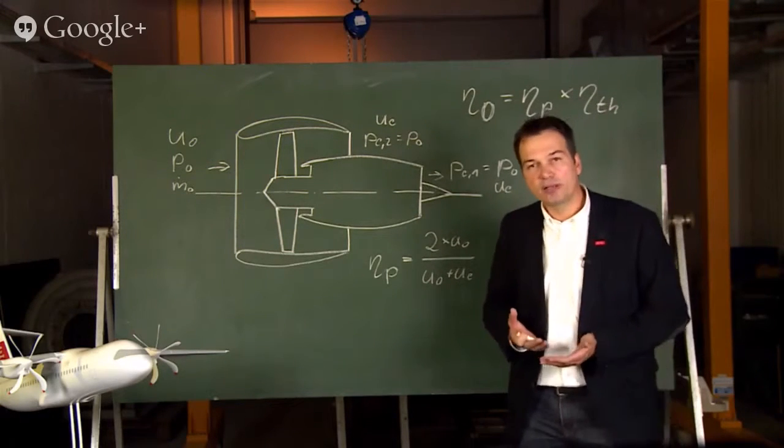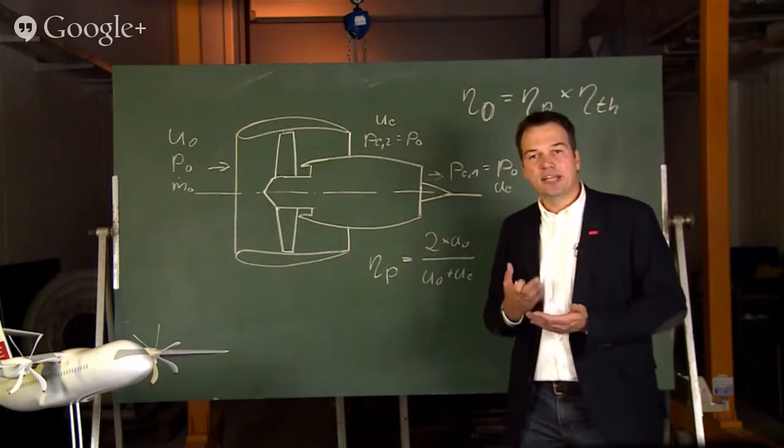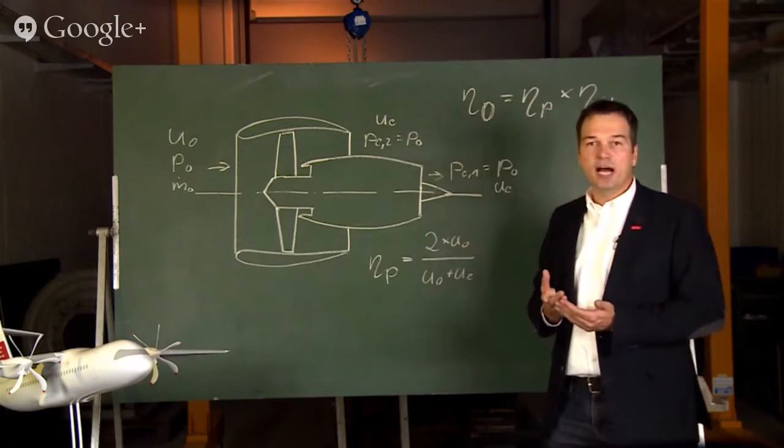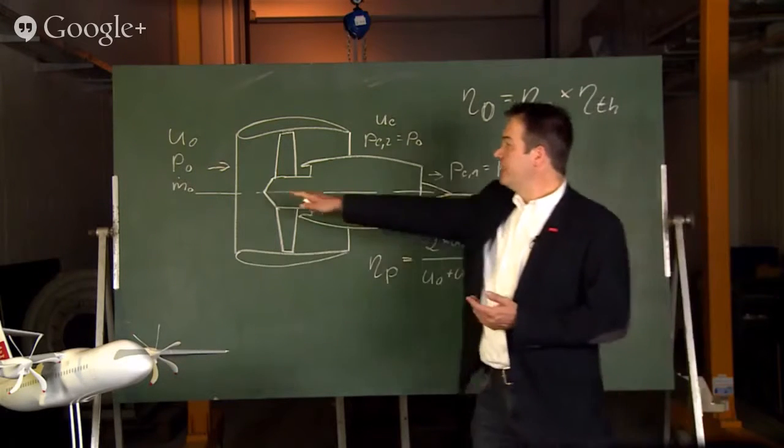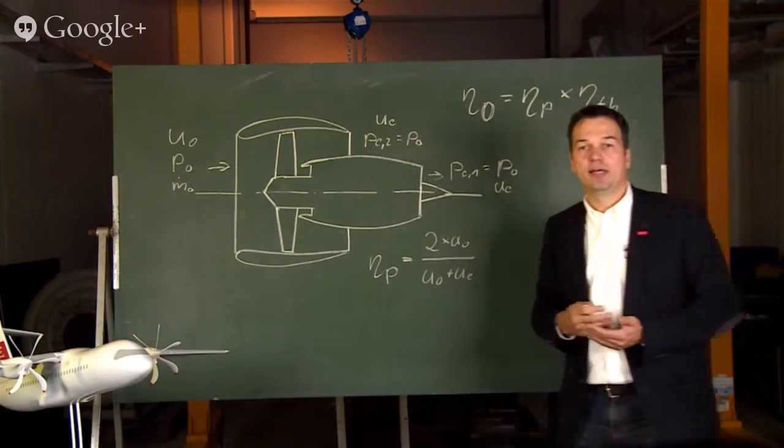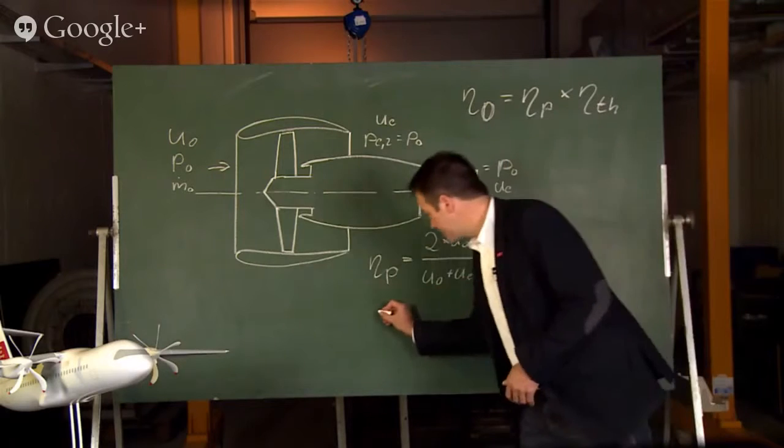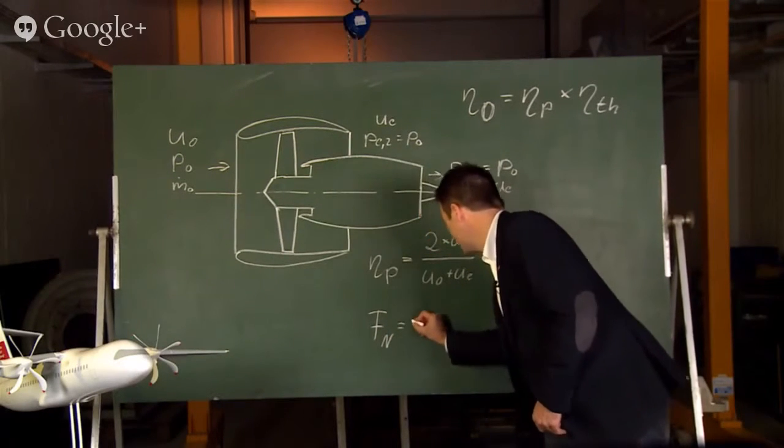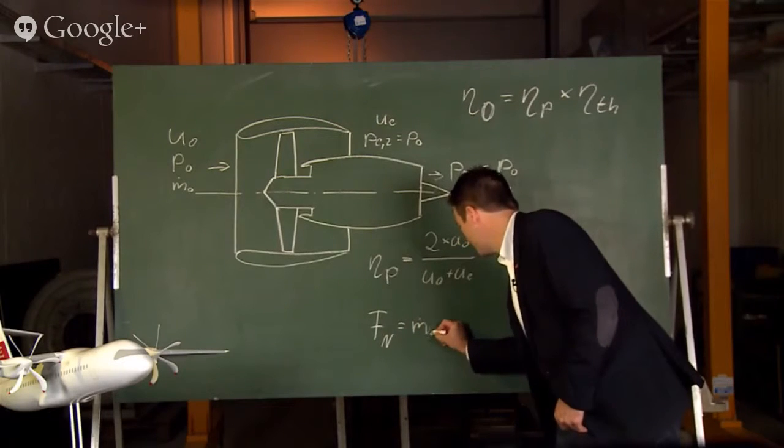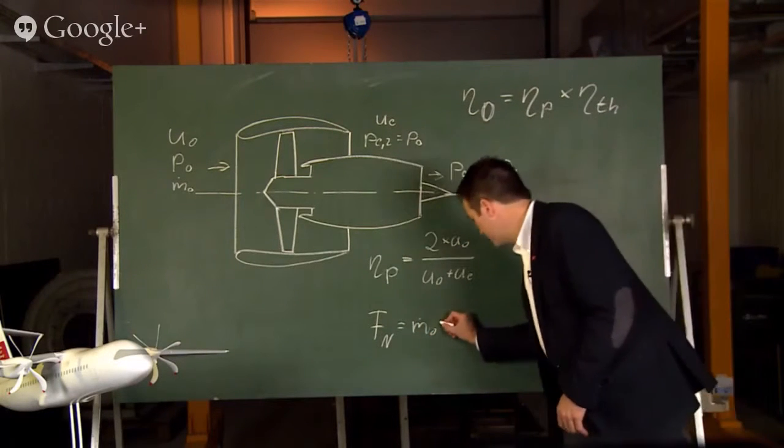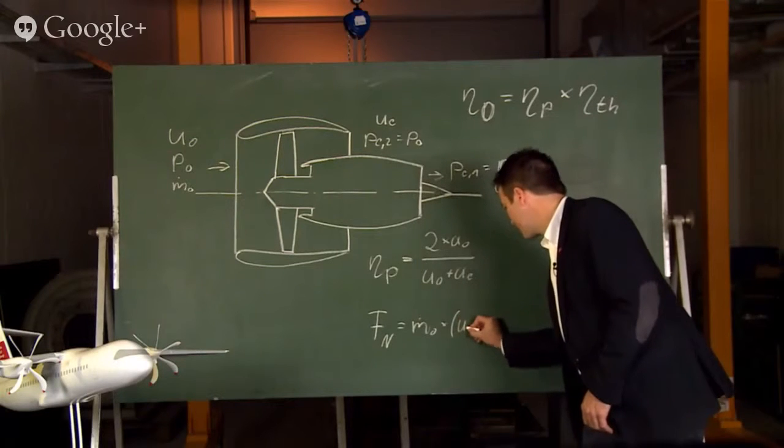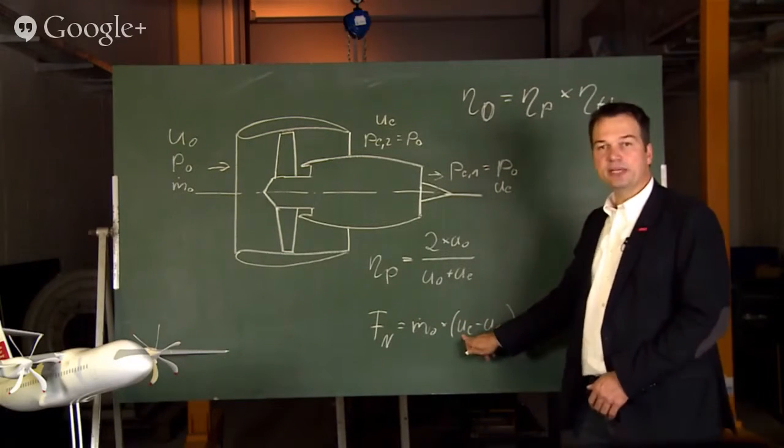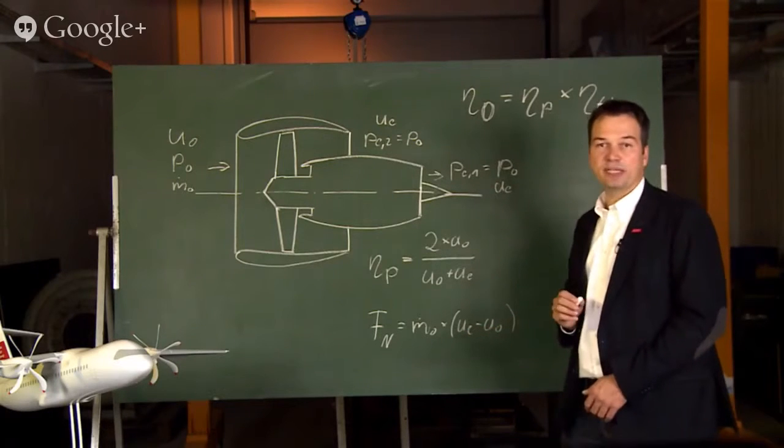The other important formulation we need is the net thrust. For the net thrust we are making use of the linear momentum equation in direction of flight. The result for the net thrust is the entire mass flow passing through the engine times the difference of our exit speed minus the flight speed.